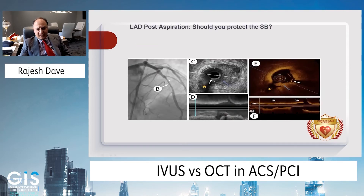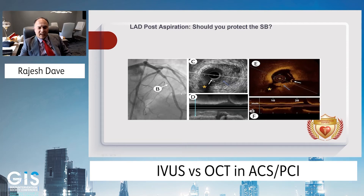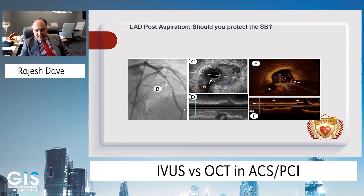Here is a patient with an acute inferior STEMI who had aspiration thrombectomy of the left anterior descending artery. There is a tubular lesion in the proximal LAD with a small to moderate-sized side branch. The question is whether to protect this side branch when placing a stent. Looking at pre-intervention imaging with both IVUS and OCT, the OCT image clearly shows a piece of thrombus protruding into the lumen of the diagonal branch. If you inflate a stent here, you'll shower thrombus into the diagonal. The same finding is shown on IVUS, though the images are much less clear.